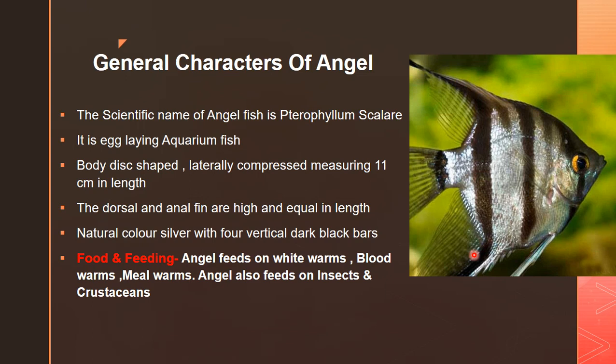The title of Unit 3 covers taxonomy, general characters, food and feeding, and breeding habits of fishes. That is why we are explaining all the concepts for each fish — first general characters, then food and feeding habits. Angelfish feeds on white worms and blood worms. It also feeds on insects and crustaceans present in the water. This covers the general characters and food and feeding habits of angelfish.